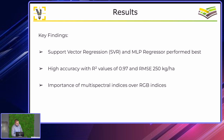We also confirmed the importance of multispectral indices over RGB indices. Many companies already do yield prediction, but they use RGB indices. RGB indices, however, in some phases of plant growth, cannot predict yield very accurately — which is where multispectral imaging provides a significant advantage.